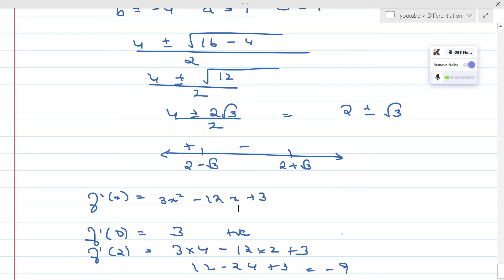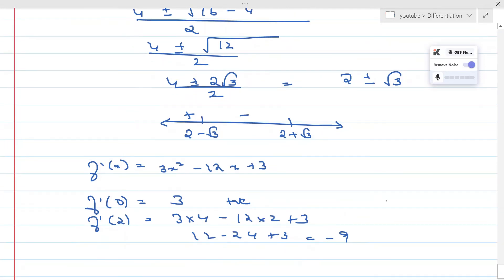Finally, 2 + √3, maybe 4 or 5. Let's pick f'(5). We'll get 3×25 - 12×5 + 3, so 75 - 60 + 3. 15 + 3 is 18. So again it's positive.